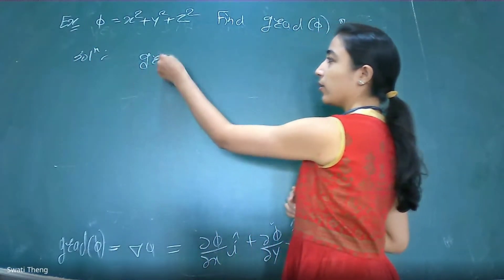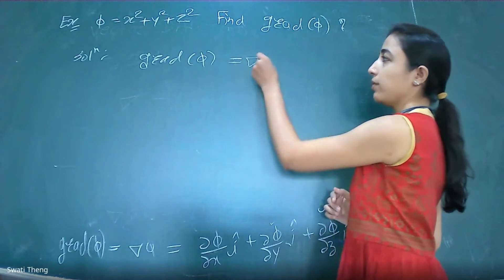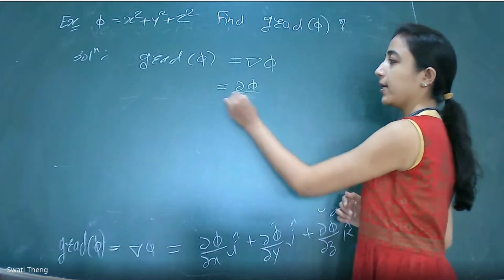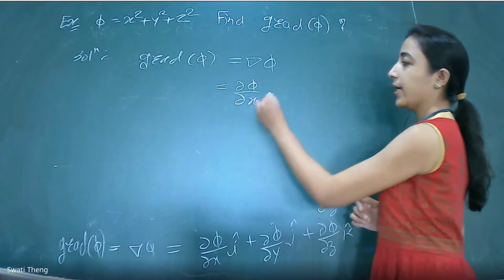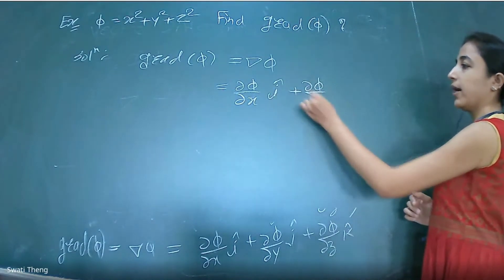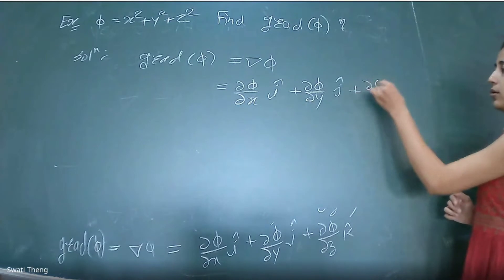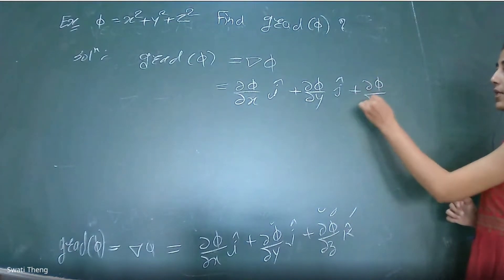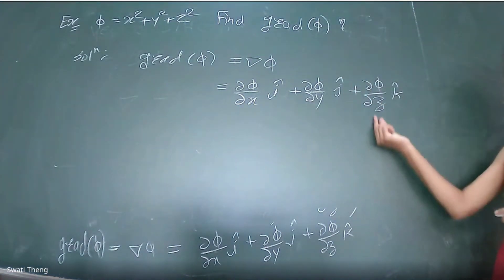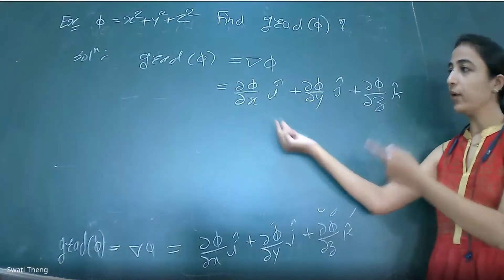So grad φ: firstly write down the definition of gradient of φ. It is nothing but ∂φ/∂x î + ∂φ/∂y ĵ + ∂φ/∂z k̂.